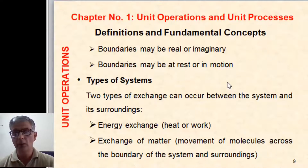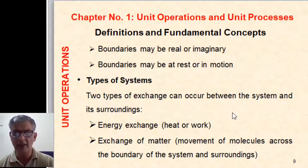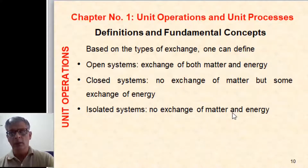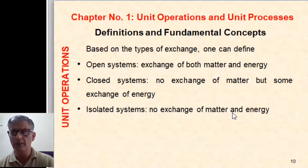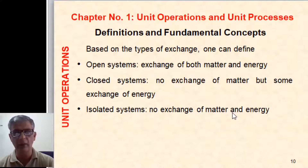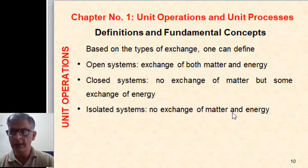Next is types of system. There are two types of exchange that can occur between the system and its surroundings: energy exchange, which mostly takes place in the form of heat and work, and exchange of matter, which is the movement of molecules across the boundary. Based on these types of exchange, we classify systems into three groups. An open system exchanges both mass and energy. In a closed system there is no exchange of matter, but there is exchange of energy in the form of heat and work. An isolated system has no exchange of matter or energy.